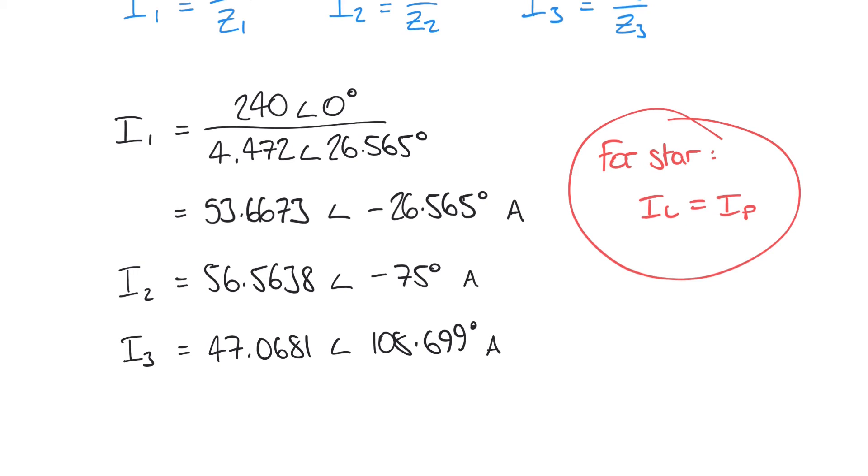The last thing we're going to do is add all of these phase currents together, because our neutral current must be the sum at the star point here of all of these three currents. When we're adding complex numbers it's much easier to do that in rectangular form rather than in polar form.